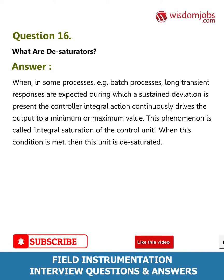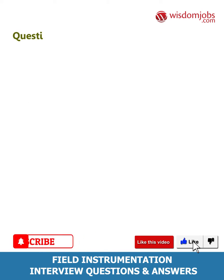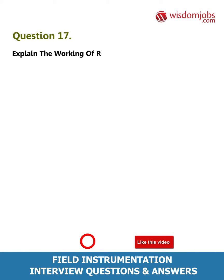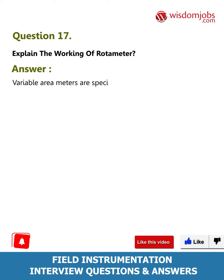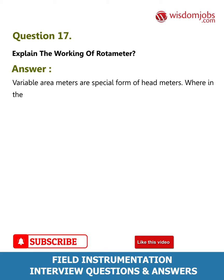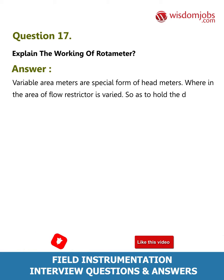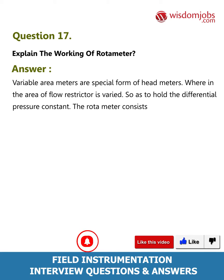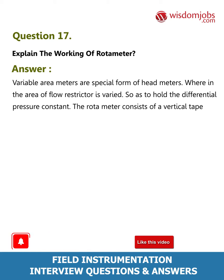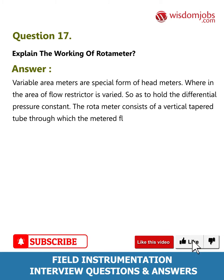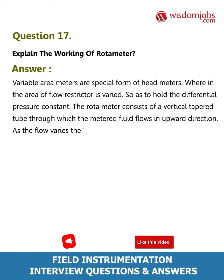Question 17: Explain the working of a rotameter. Answer: Variable area meters are a special form of head meters wherein the area of the flow restrictor is varied so as to hold the differential pressure constant. The rotameter consists of a vertical tapered tube through which the metered fluid flows in an upward direction. As the flow varies, the float rises or falls.